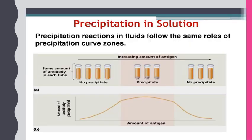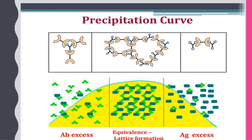Precipitation reaction in solution: five test tubes are serially named. In the first step, equal amounts of antiserum are added, and in the second step, increasing concentrations of antigen are added. From this, precipitation is formed. The precipitation will be higher where there is equal amount of antiserum and antigen. The center tube of the reaction contains equal amounts of antigen and antibody, which leads to lattice formation.